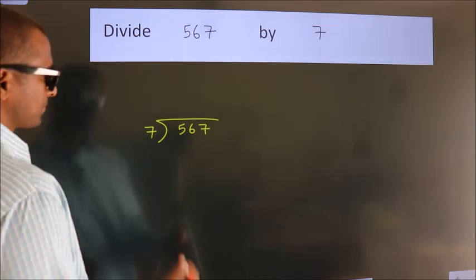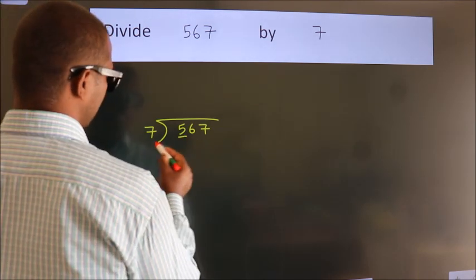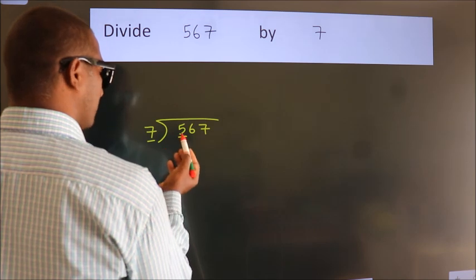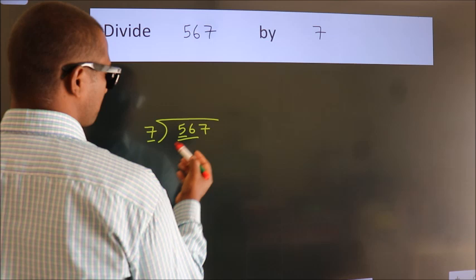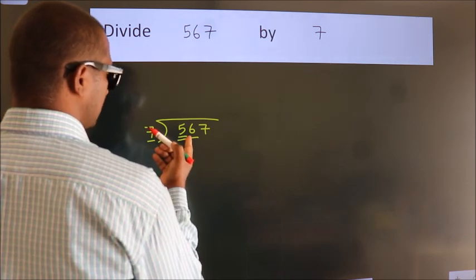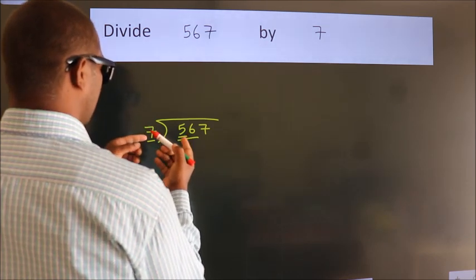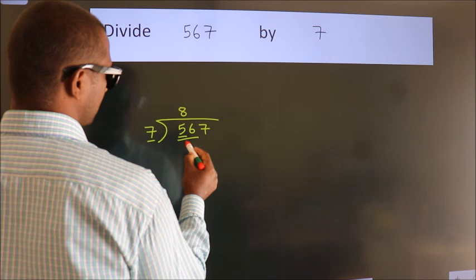Next, here we have 5, here 7. 5 is smaller than 7, so we should take 2 numbers: 56. When do we get 56? In the 7 table. 7 times 8 is 56.